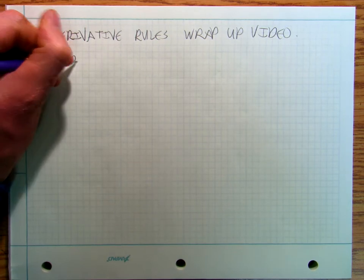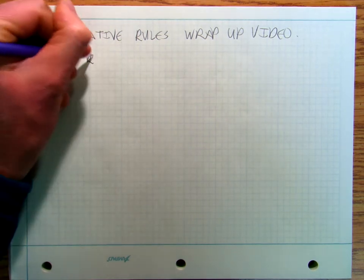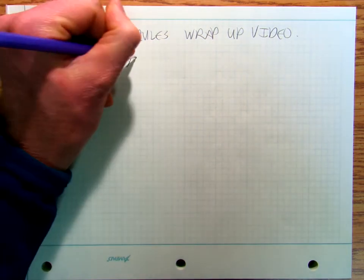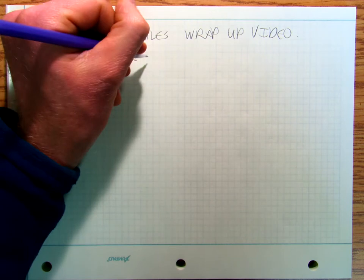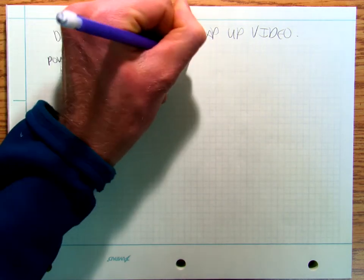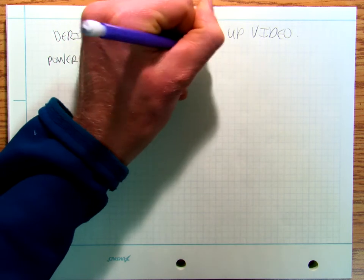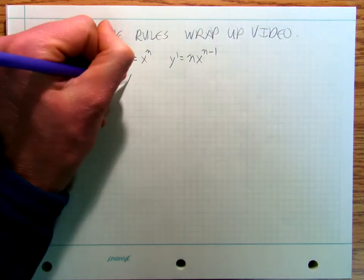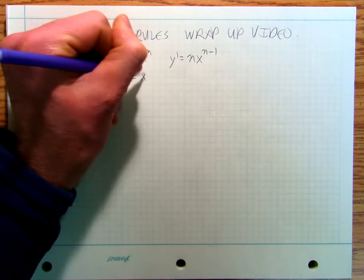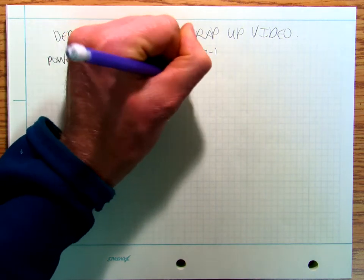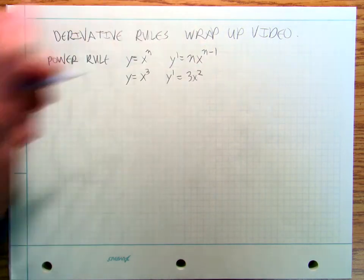Power rule. y equals x to the n, y prime is equal to n times x to the n minus one. So y equals x cubed, y prime is equal to three x squared.